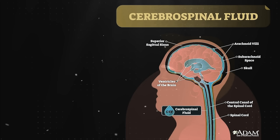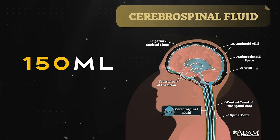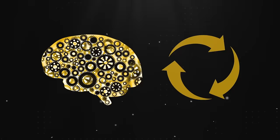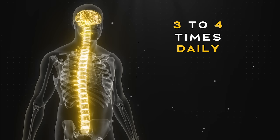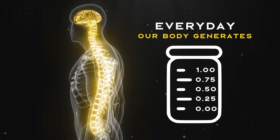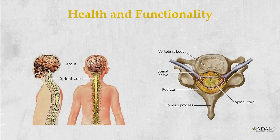Interestingly, the human body contains about 150 mL of cerebrospinal fluid at any given time. This fluid isn't stagnant — it's continuously replenished, undergoing a complete turnover approximately three to four times daily. This equates to the body producing between 450 to 600 mL of cerebrospinal fluid each day. Every day, our bodies generate about half a liter of this essential fluid, highlighting its significance in maintaining the health and functionality of our central nervous system.